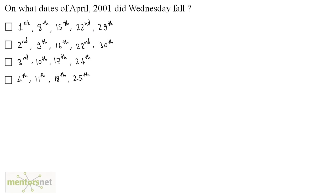On what dates of April 2001 did Wednesday fall? To find the answer, first you will have to calculate what was the day on 1st of April 2001. So let's first calculate that. The number of odd days till 1st of April 2001 will be the number of odd days till 2000 years plus the months of 2001 till April. So January, February, March and April.